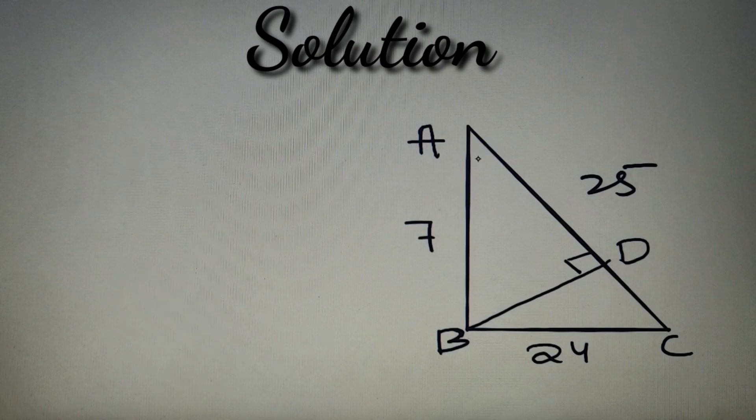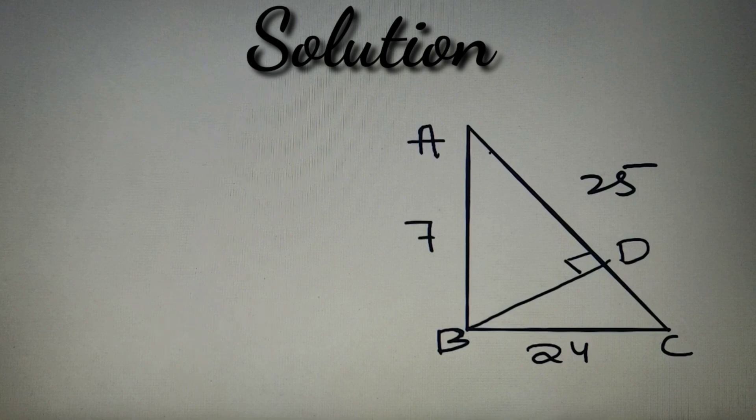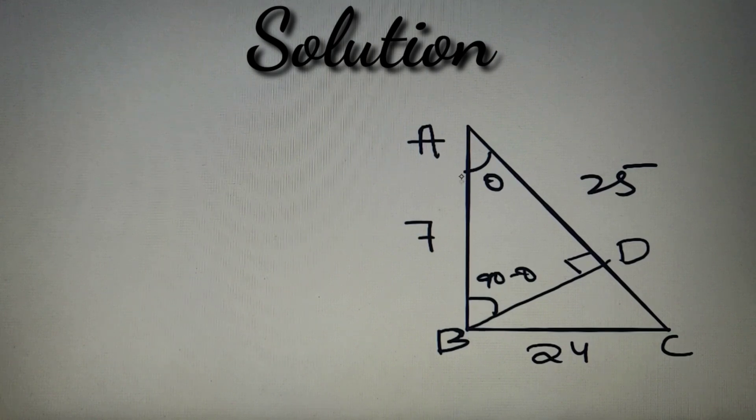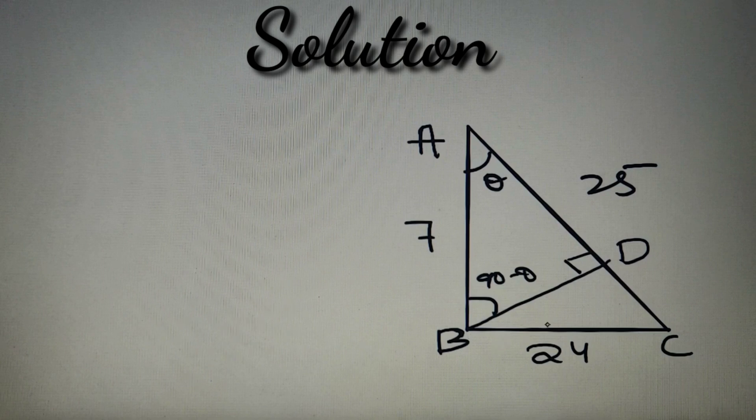To solve this question by the similarity method, we have to first find the angles of this triangle. If I take this angle as theta, then this angle becomes 90 minus theta, because this angle is equal to 90 degrees and the sum of these two angles must equal 90.